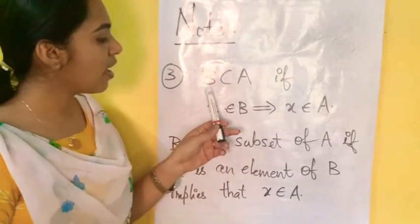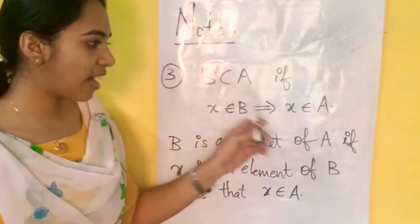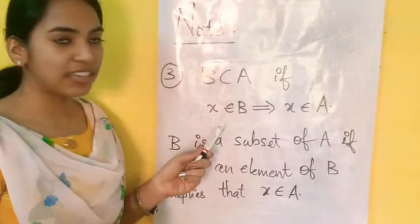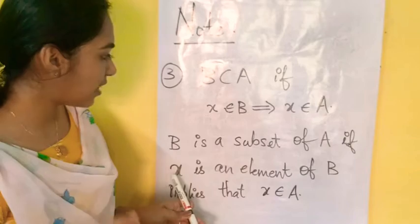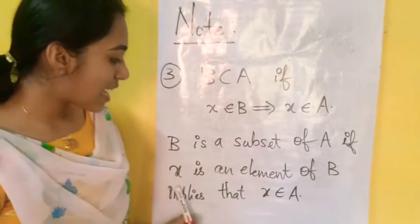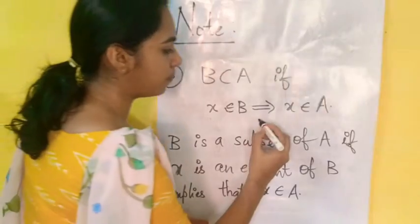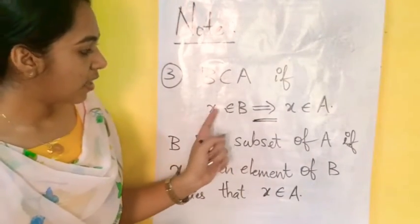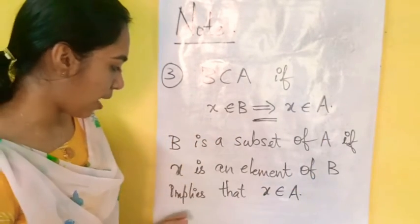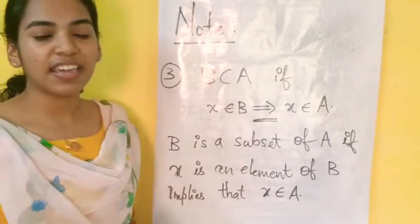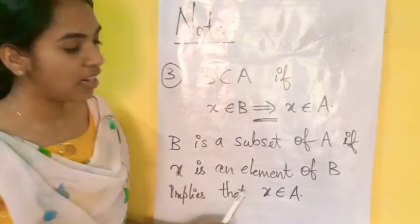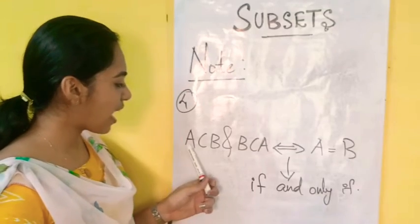B is a subset of A — B means A subset. If x is an element, we call it epsilon. B is a subset of A if X is an element of B, which implies — using the implication symbol — that X belongs to A. So this is the formal definition: B ⊆ A if x ∈ B implies x ∈ A.